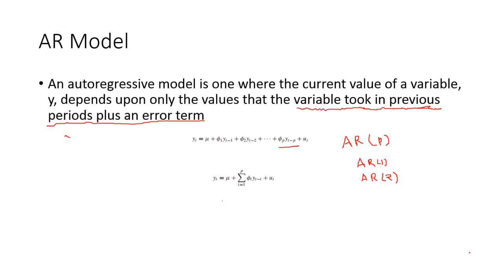An autoregressive model is one where the current value of a variable — say the variable y — depends only on the values that the variable took in previous periods, plus an error term. This is how an autoregressive model looks in mathematical form. So yt, our data series, depends on the previous values: yt minus 1, yt minus 2, up to yt minus p, and there is an error term or disturbance term.